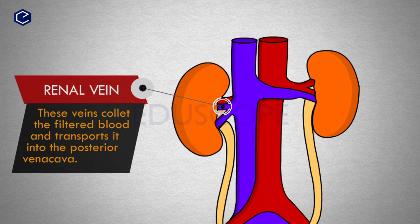The renal veins collect the filtered blood and transport it into the posterior vena cava.